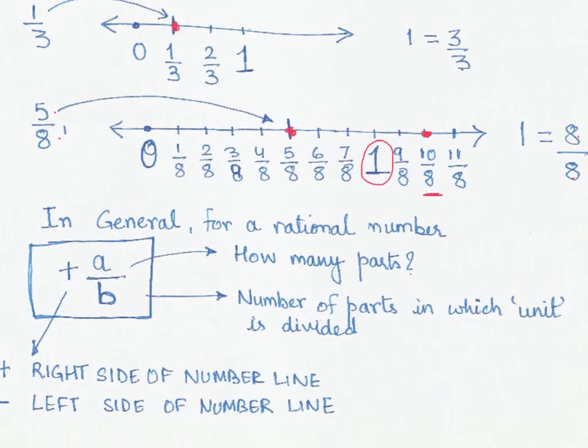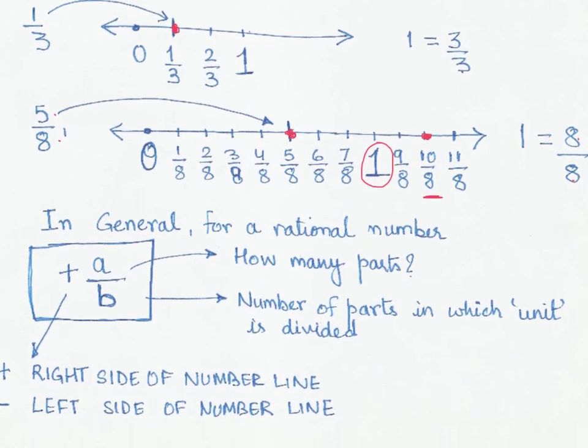Another interesting thing to notice: you could also have a negative rational number. If the sign is positive, we traverse towards the right-hand side of the number line. If the sign is negative, we travel to the left-hand side of the number line. That is how you represent rational numbers on a number line.